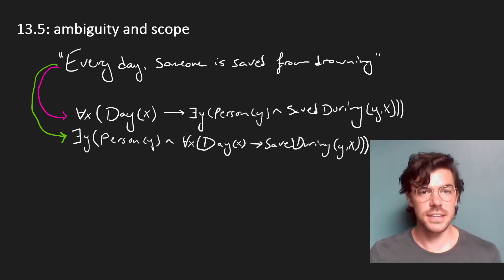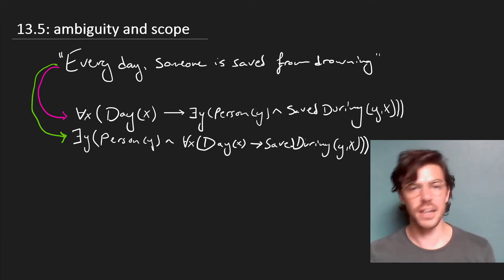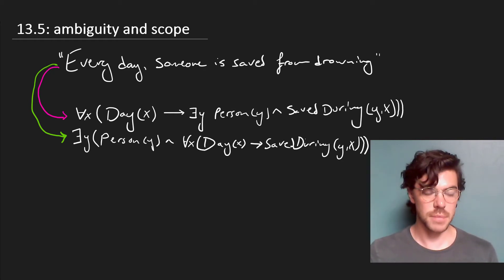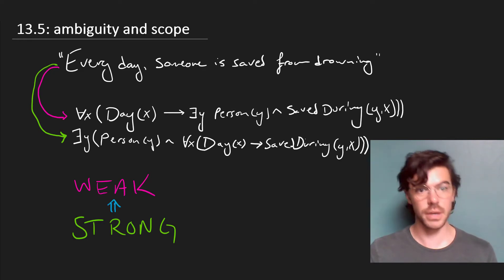And what this says is that there's some person who, for every day, is getting saved during that day. So, it's being saved from drowning. So, there's one particular person that's always being saved by a lifeguard or whatever on any given day. This bottom one is sometimes called the strong reading, and the top one is sometimes called the weak reading. And notice that the strong reading actually implies the weak reading, but not the other way around.